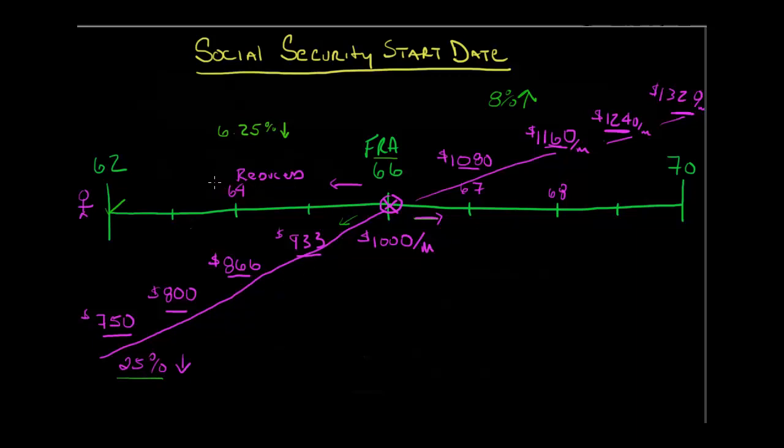We also noted that on this side of the equation you can run into income limitations, meaning if you decided to retire at 62 but go back to work and make too much money, you may have to forgo some of your Social Security benefit. On this side, if you delay past your full retirement age, you have an increase of 8% per year and no income restrictions until you get to age 70 where it maxes out at $1,320.